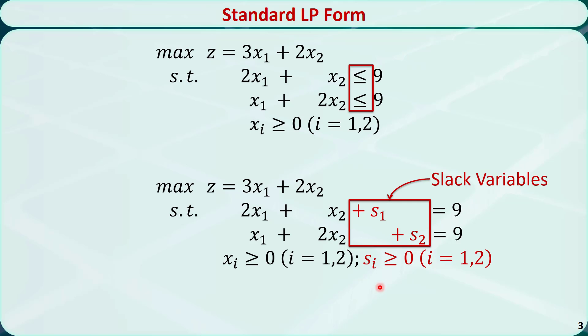In order to change them into equations, we need to add two new variables, S1 and S2. They are called slack variables. Both S1 and S2 are greater than or equal to 0.